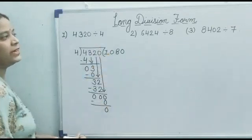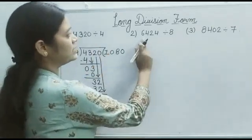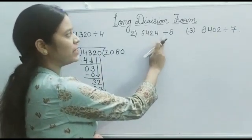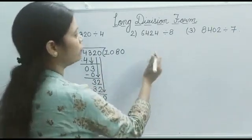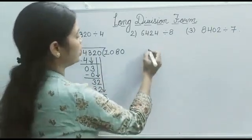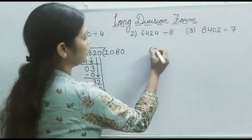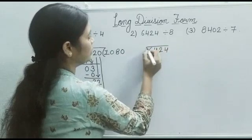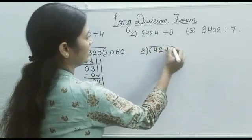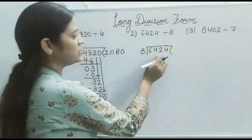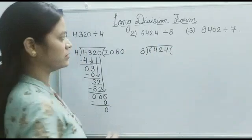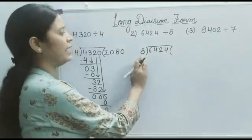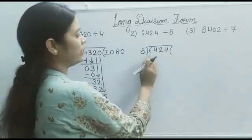Now we take the next example: 6424 divided by 8. First we need to write it in the long division format — 6424 divided by 8, like this. This is the format of long division. Here we will use the table of 8.